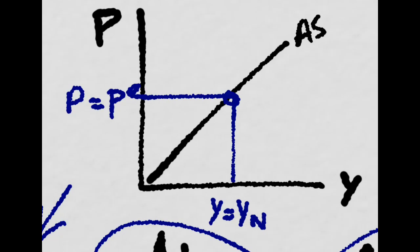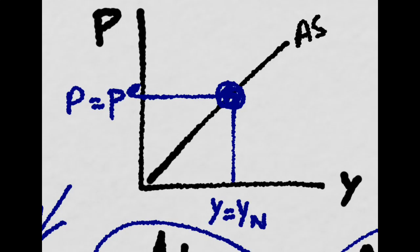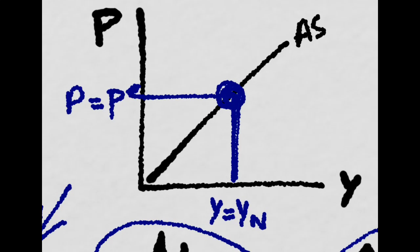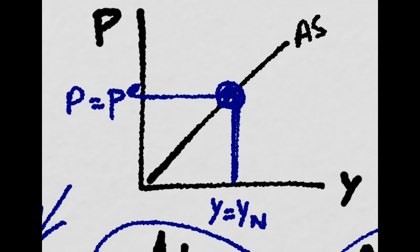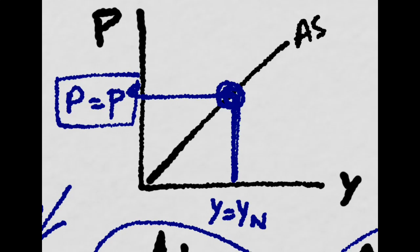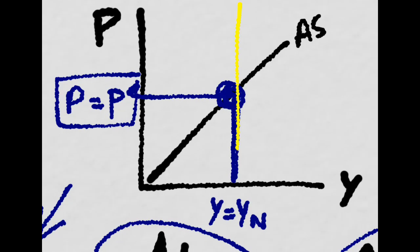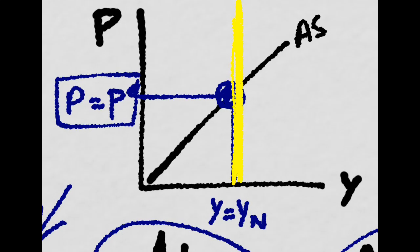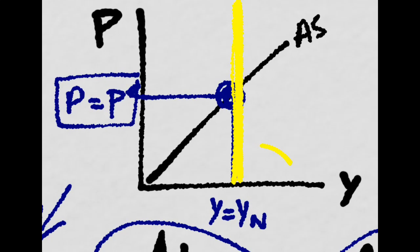And there is a unique point right here, which is where output is equal to natural output level. And that is the only point where the prices equal the expected price level. So you will see that it's at this level of output where it equals the natural level of output where we find the medium run level of output.